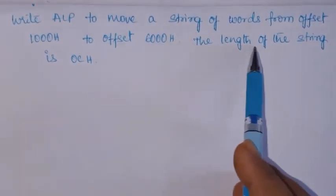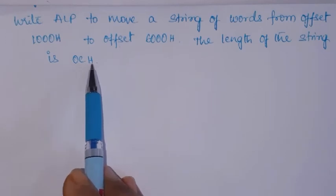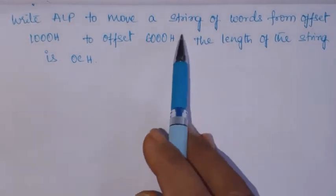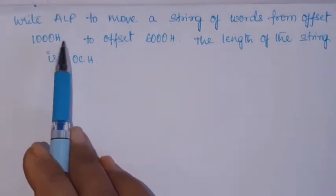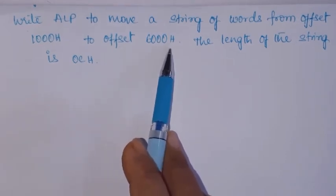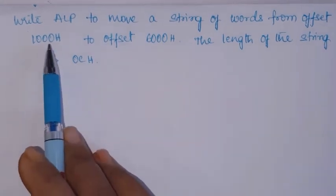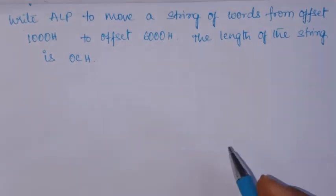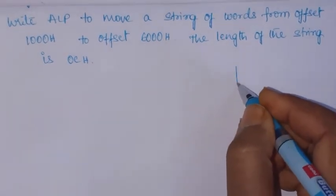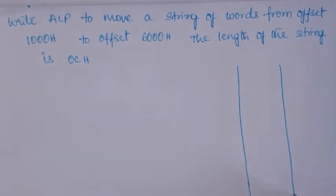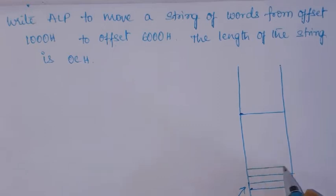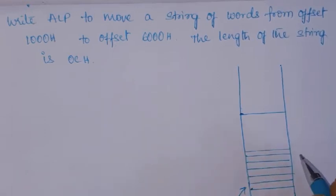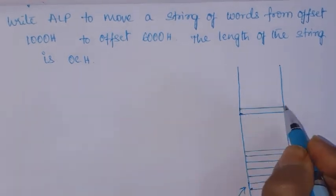The number of words, that is the length of the string, is 0CH. So it is asked to move 0CH words stored starting from location 1000H to location 6000H. In memory, the source location has offset address 1000H, and there are 0C words in consecutive locations to be transferred to the destination.